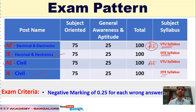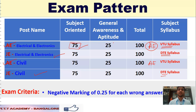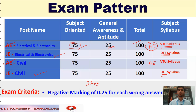It is better to concentrate on both syllabuses. If you focus on both the VTU and DTE syllabus, you can get into either AE or JE. Regarding the examination pattern, this is 75 marks from your departmental subject — electrical or civil — and the remaining 25 marks from general awareness and aptitude. This is a totally 100-mark question paper, and you have to finish it within two hours, that is 120 minutes.